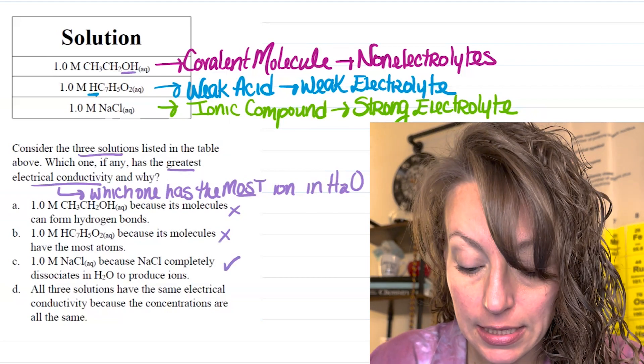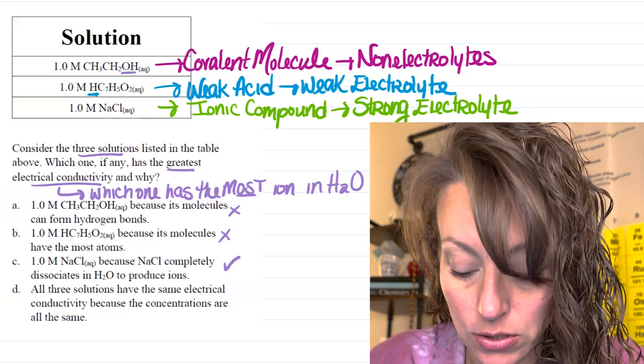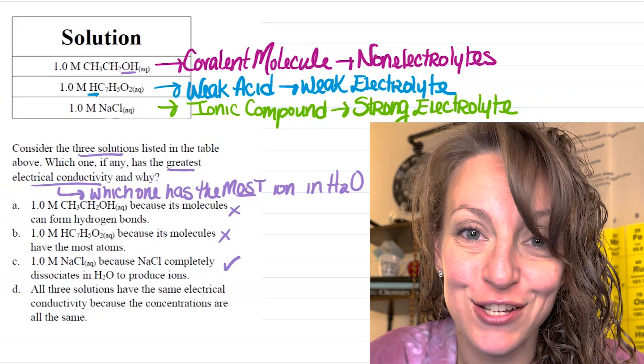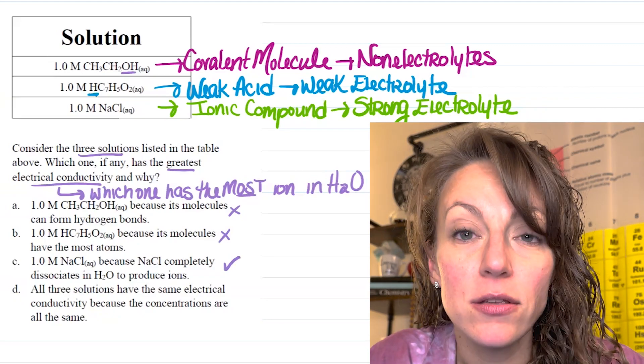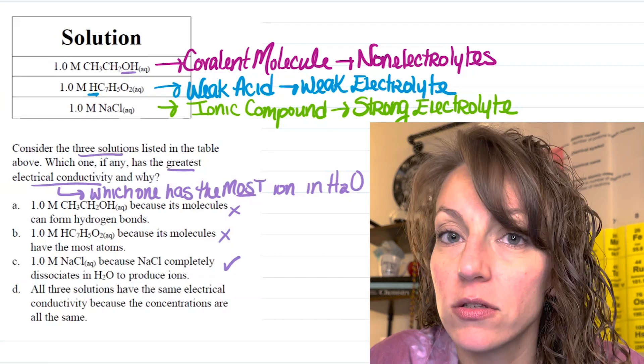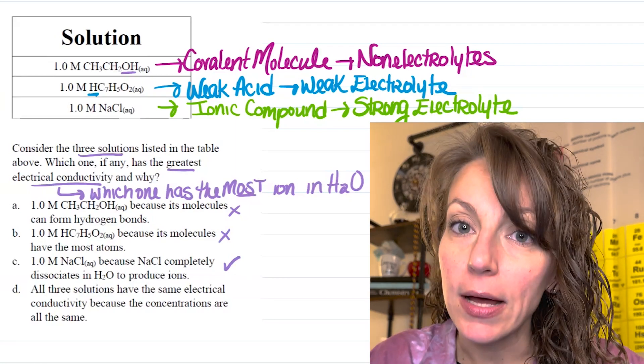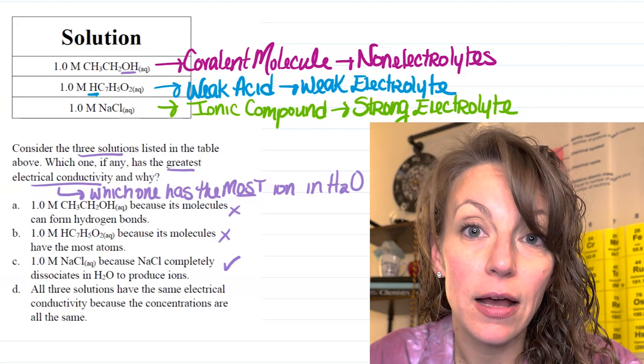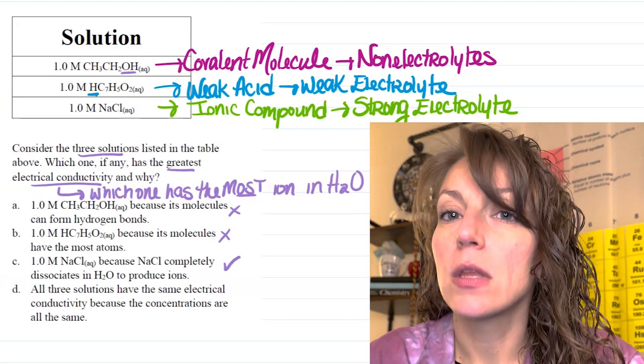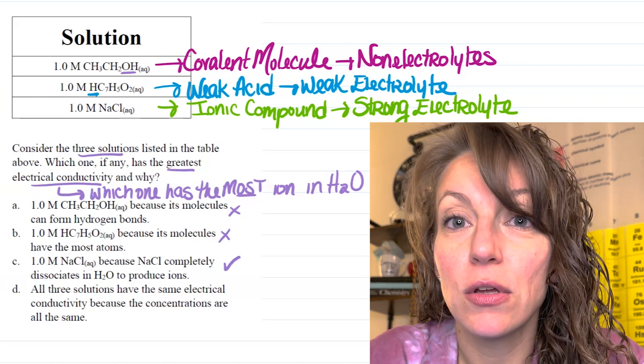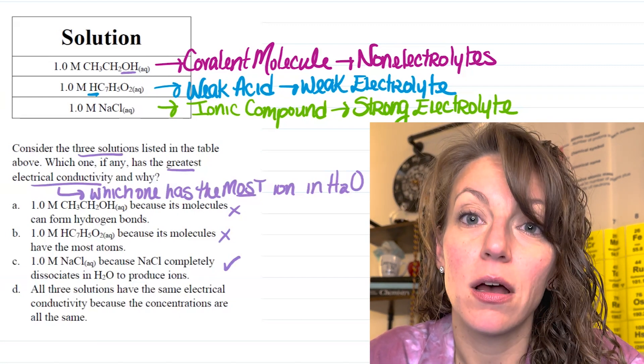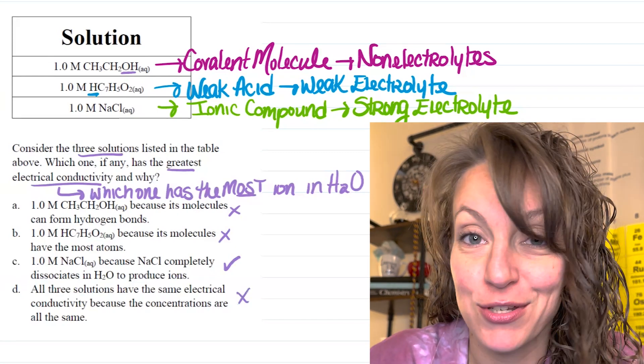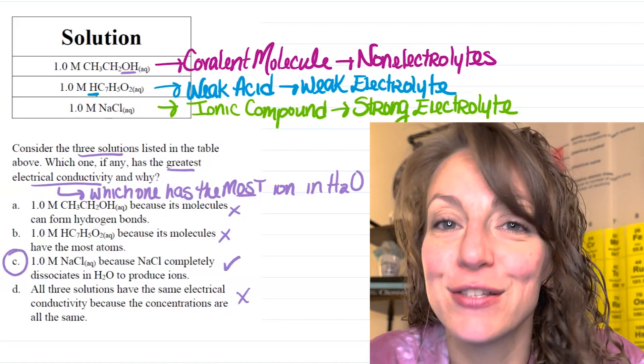Let's just check letter D. Letter D says all three solutions have the same electrical conductivity because the concentrations are all the same. Yes, all three are at a concentration of 1.0 molar. But since all three species already produce a varying amount of ions in solution, they're going to conduct a varying amount of electricity to begin with. So, D is not a great option either. So, the answer here would be letter C.